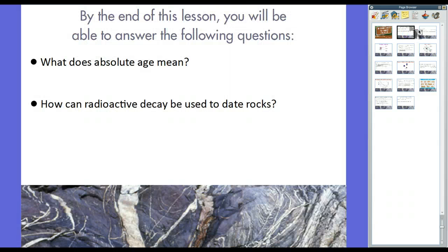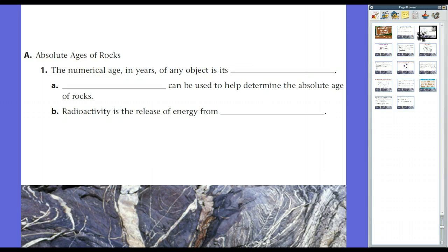By the end of this lesson, you will be able to answer the following questions. Number one, what does absolute age mean? And number two, how can radioactive decay be used to age date rocks? We talked about the difference between relative and absolute age. With relative age in terms of rocks, layers with superposition, ones on the bottom are older than the ones on top. But the numerical age, the exact age in years, is absolute age.